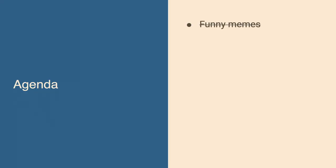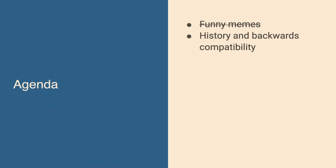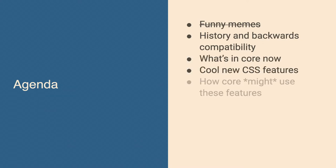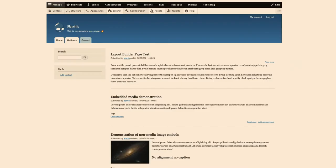We're going to talk about the history and backwards compatibility problem that we have, what's in Core now, and some cool CSS features. So, even if you're not a Drupal person but you know a bit about CSS, I'm probably going to teach you something. Hopefully at the end you'll be super excited about it, because I am. We're going to talk about how Core is going to use this.